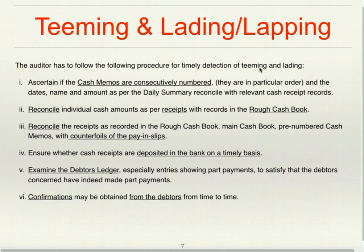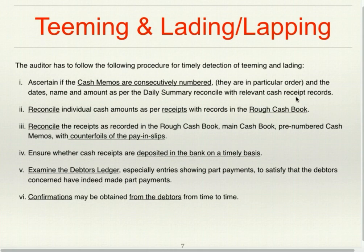To detect teeming and lading, the auditor should follow a specific procedure. He should ascertain if cash memos are consecutively numbered — that is, in a particular order — and verify that the date, name, and amount as per the daily summary reconcile with the relevant cash receipt records. The first reconciliation is between the cash receipt records and the daily summary.